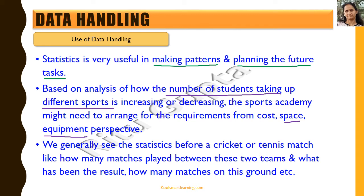Similarly, when it comes to weather forecasting, the meteorological department looks at past data — if conditions like humidity, temperature, and wind were a certain way, how many times has it rained in the past? That gives them a percentage likelihood, so they say there is a 60% chance of rain today. This is based on past statistics, and that is why this study is so important — it does not just give you past data, it helps you plan for present and future activities.